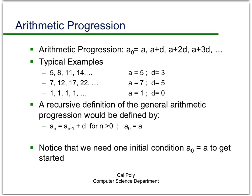Let's take a closer look at the arithmetic progression. We'll let the 0th term be a, the first term will be a+d, the second term a+2d, the third term a+3d. Here's some simple examples. If we let a equal 5, d equals 3, then the sequence is going to look like 5, 8, 11, 14. In this second example, we'll let d be 5, so it'll go up by 5 each time: 7, 12, 17, 22.